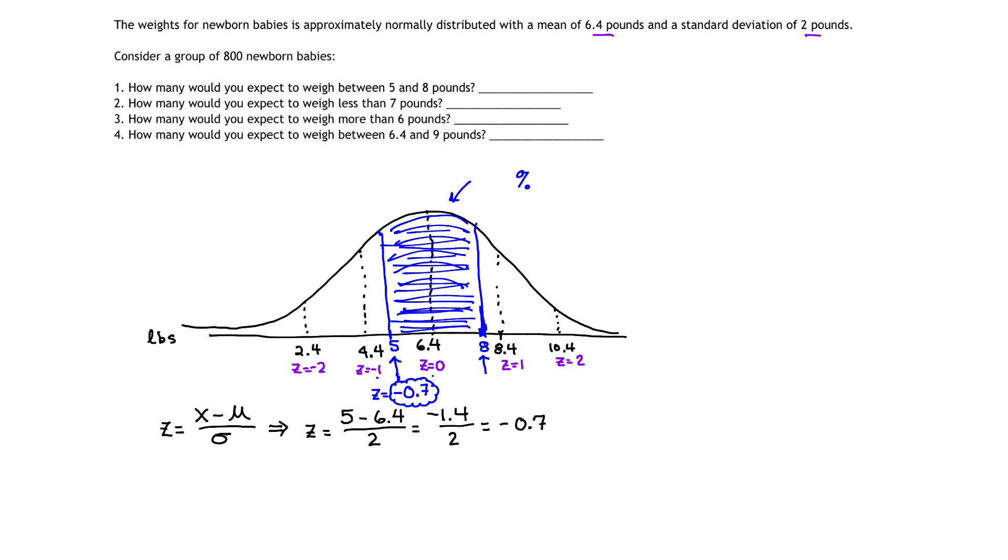Now let's get our second z-score. Our second z-score is occurring when I have 8 pounds. And so again, I'm going to use this formula, except this time we're going to substitute 8 in place of X. So I have 8 minus 6.4 divided by 2.